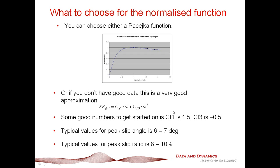Some really good rules of thumb: CF1 is about 1.5 and CF3 is about minus 0.5. This comes in the ChassisSim defaults and has proven to be a very effective approximation over the years. One of the nice things about it is that in the typical Pacejka formulation, beyond the peak slip angle it drops off a bit but not a lot. With this normalized force factor curve, the drop-off beyond the slip factor is actually quite pronounced, which is really a good thing.